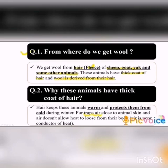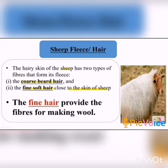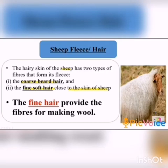We get wool from animals like sheep and goat, which are mainly found in hilly regions. We wear woolen clothes like sweaters and mufflers in winter season. These woolen clothes keep our body warm. Commonly available wool in the market is sheep's wool. The wool fiber is obtained from the fleece of the sheep.